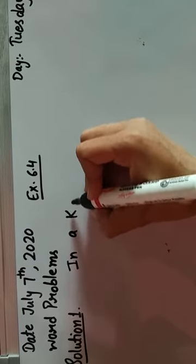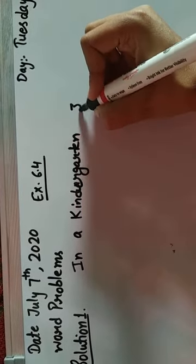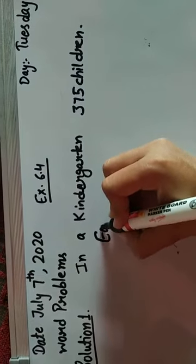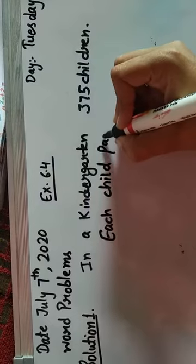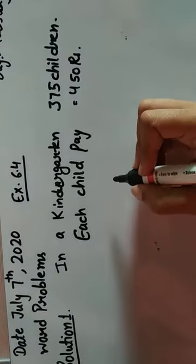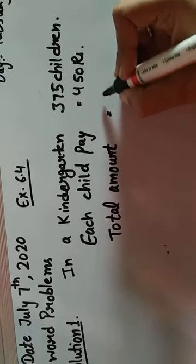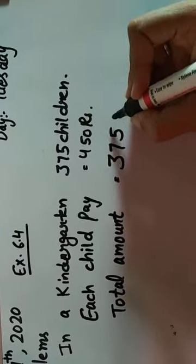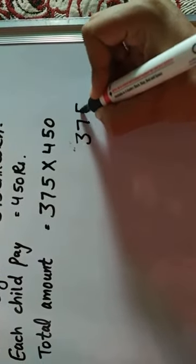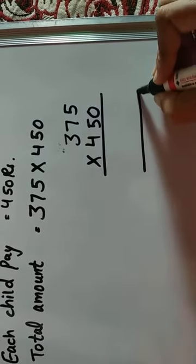In a kindergarten, 375 children. Each child pays, each means one child, one child pays 450 rupees. What is the total amount received in a month? So we will do here multiply: 375 multiply by 450, three digit by three digit multiply.